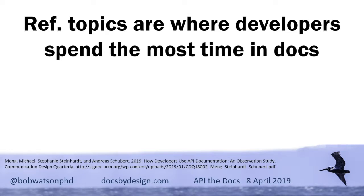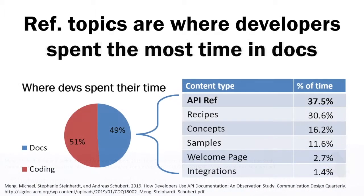These are examples from research I've done on reference topics. A recent study showed that reference topics were where developers spent the most time. There's a common claim that half of development time is spent Googling — and there's evidence to support that. In this particular study, about 49% of the time developers were just writing code, and the other half was looking things up. Across all the documentation types they referenced, the welcome page was at the bottom of time spent, while reference topics and how-to recipes were at the top.